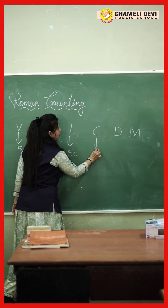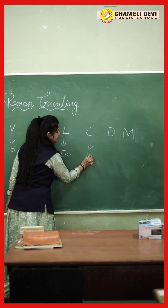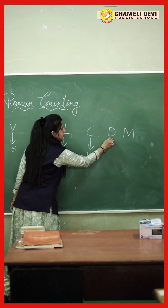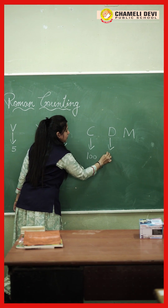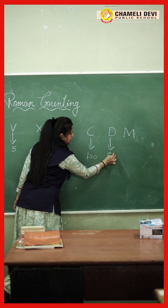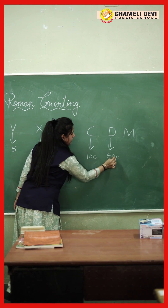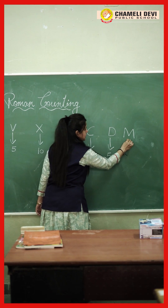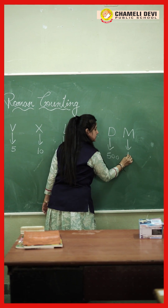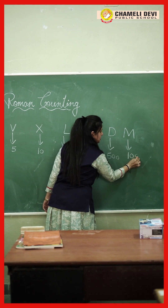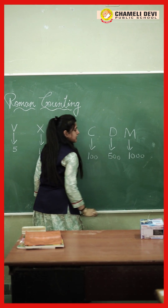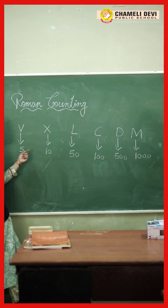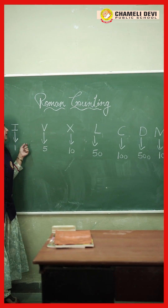C stands for 100, D stands for 500, and M stands for 1000. So these seven letters you need to learn.